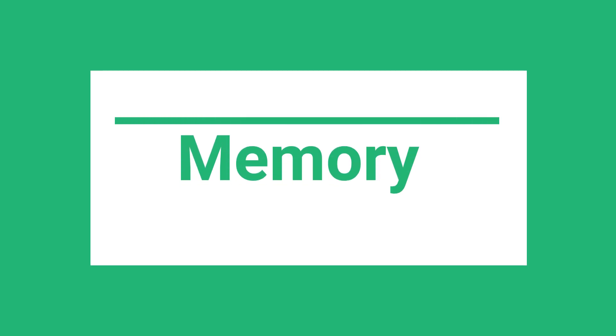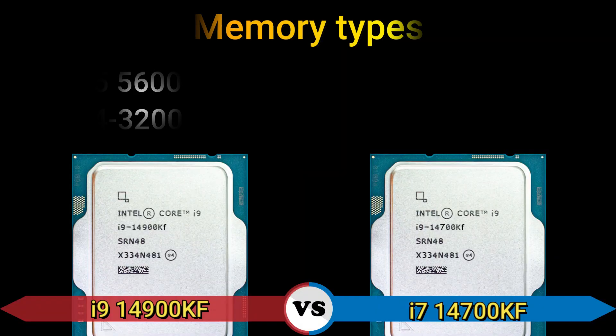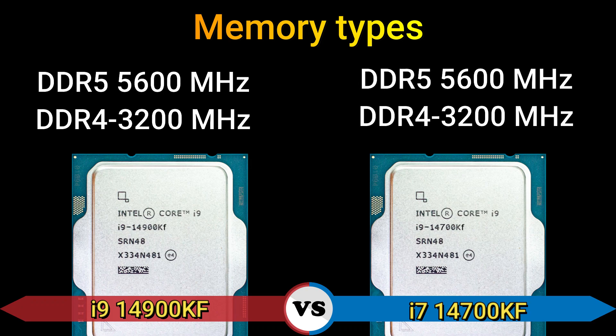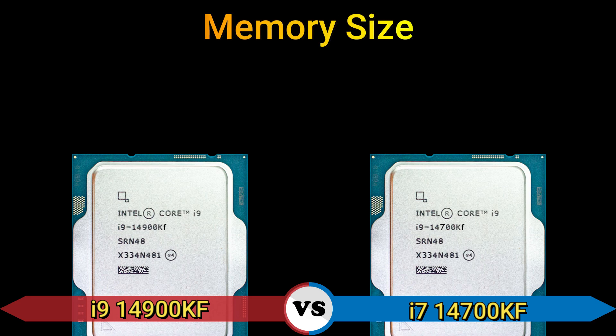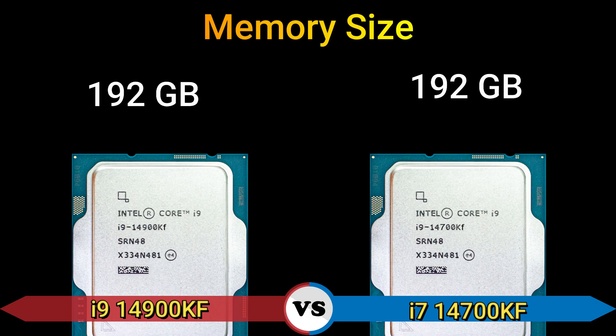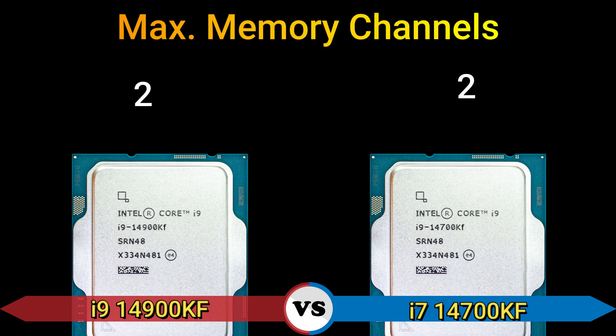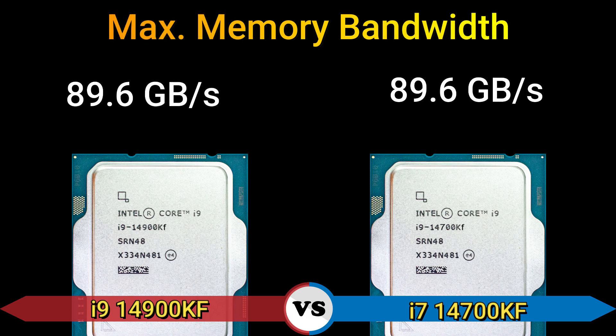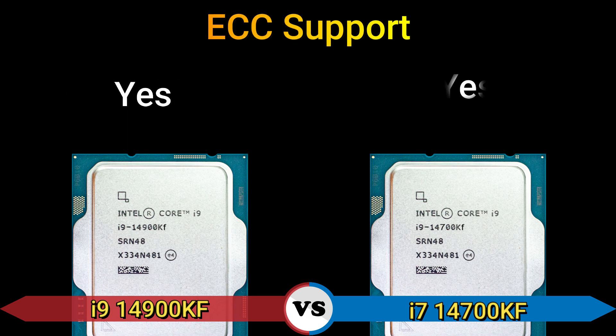Memory types: DDR5 5600 MHz and DDR4 3200 MHz. Max memory bandwidth: 89.6 Gbps. ECC support: yes.